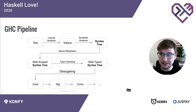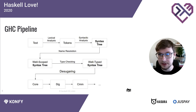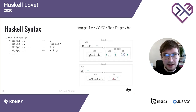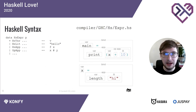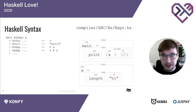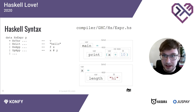Desugaring takes a tree representing the source program and converts it into a Core program. Core is a language like Haskell but much smaller with fewer features. To understand how Core is simpler, let's look deeper at Haskell. To represent a Haskell expression, GHC defines a type called HsExpr. If you open the GHC sources in the compiler/GHC/Hs/Expr.hs file, you'll see this data type with a constructor for each node type.